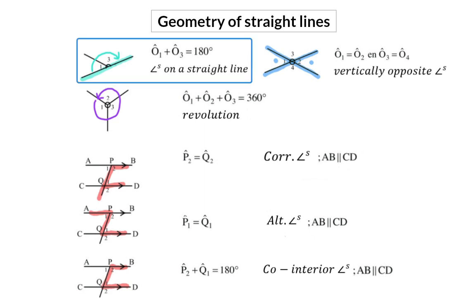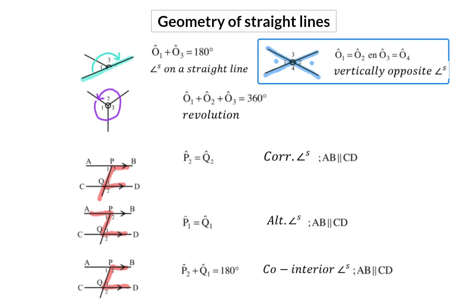Firstly, angles on a straight line that always add up to 180 degrees. Next, a revolution where the angles around a point add up to 360 degrees, and then also vertically opposite angles where two straight lines intersect. These two angles are then equal in size.